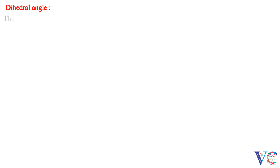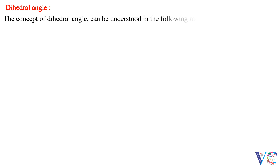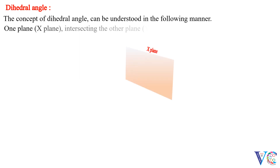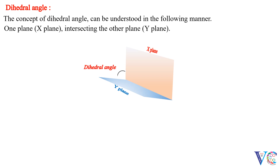The concept of dihedral angle can be understood in the following manner. One plane, X-plane, intersecting the other plane, Y-plane. The interior angle subtended between the two intersecting planes is called dihedral angle.